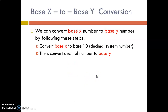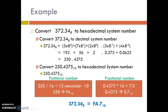Next, we will see how to convert any number system with base X to base Y. To convert a number system with base X to base Y, it involves two steps. First, we convert base X to decimal (base 10). Then we convert that decimal number to base Y. This is illustrated with an example: converting an octal number to a hexadecimal number, which initially involves converting octal to decimal, then that decimal number is converted to hexadecimal.